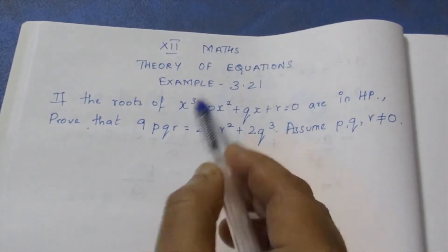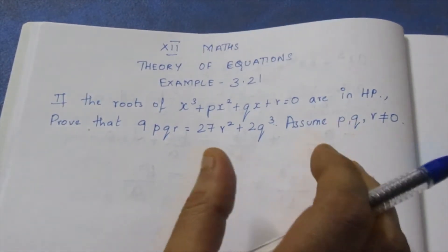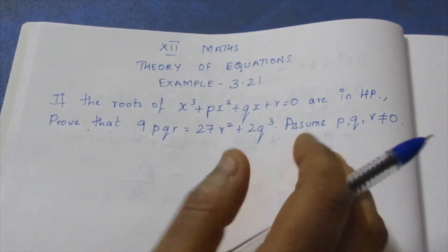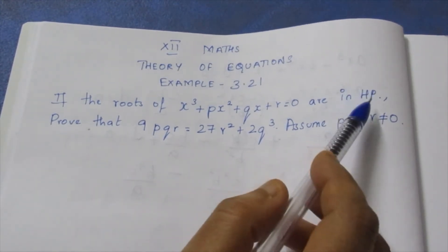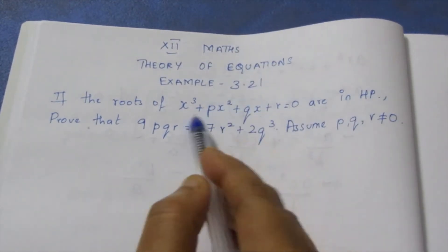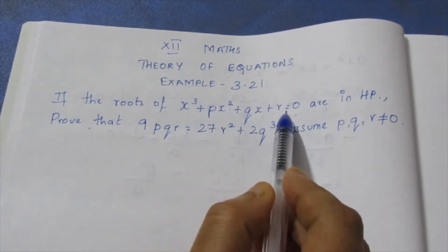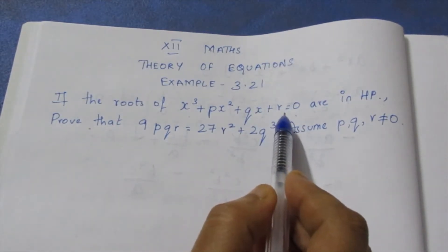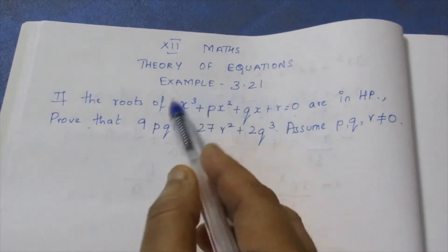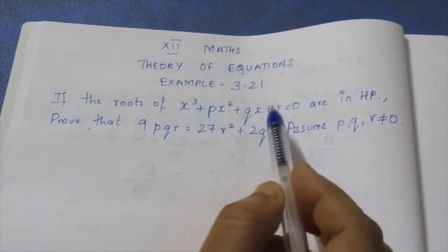This equation has roots in harmonic progression. How do we handle harmonic progression? The reciprocal of a harmonic progression is an arithmetic progression. So we consider the arithmetic progression, where the roots in AP are obtained by substituting 1/x into the equation.